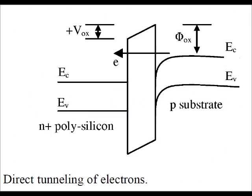One example of quantum tunneling in a real-world application is extremely thin transistor gate oxides. Pictured here is a diagram of direct tunneling of electrons from a p-type substrate through a gate oxide. Psi-ox is the potential wall of the gate, usually described in electron volts.